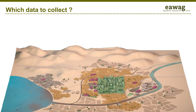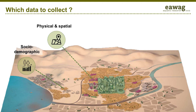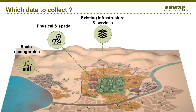We can consider five assessment realms. First, you have the social demographic facts, like population numbers, density and income. You then have the physical and spatial dimensions, like the topography, climate and natural risk, the local geology and groundwater table. Once you have a grasp over the structure of the city, you can look at urban services and infrastructure in the different neighborhoods. Note that you should not only look at sanitation infrastructure and services, but also at water supply, solid waste management and stormwater management.